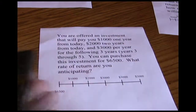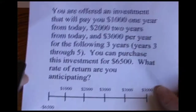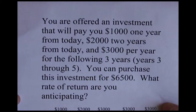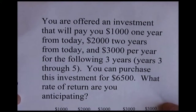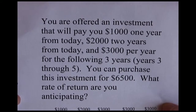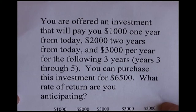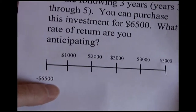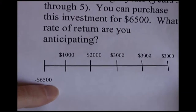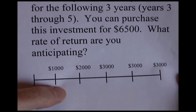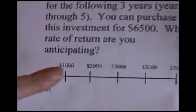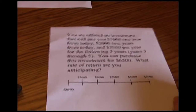In addition to finding the present value, we can also figure out what rate of return we're making on an investment. In this next problem, we're offered an investment that will pay us $1,000 one year from today, $2,000 two years from today, and $3,000 per year for the following three years — years three, four, and five. You can purchase this investment for $6,500. What rate of return are you anticipating? Our cash flow stream looks like this: we're going to spend $6,500 today — note that's a negative, an outgoing cash flow in year zero. In year one we get $1,000, year two $2,000, and in years three, four, and five we get $3,000 per year. We want to know our rate of return — we're calculating the internal rate of return.